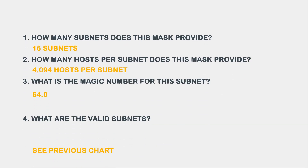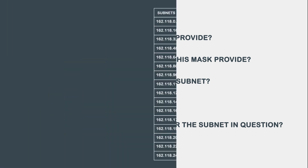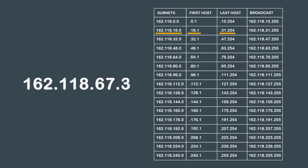Question 5: What is the broadcast address for the subnet in question? If we look at the 162.118.16.0 subnet from our chart, all of the hosts are between 162.118.16.1 and 162.118.31.254. Our IP address for this problem is 162.118.67.3, and we can now see that it falls within this range. Based on our chart, the broadcast address and the answer to question 5 is 162.118.31.255.